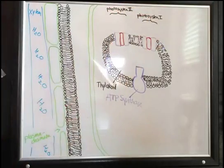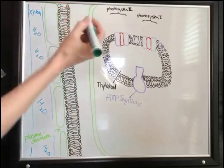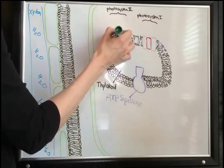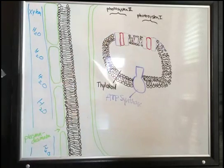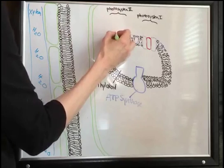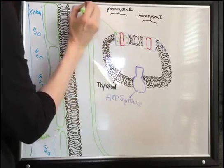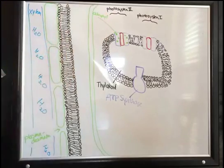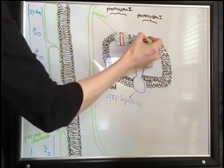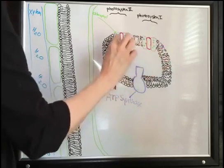So photosystem II, photosystem I. In the photosystem, this is where the pigment for photosynthesis is, and it's called chlorophyll. Inside of here, we have little chlorophyll molecules. Those are in both photosystems and they look exactly the same. We have a bunch of them in these light harvesting complexes — the purple part.